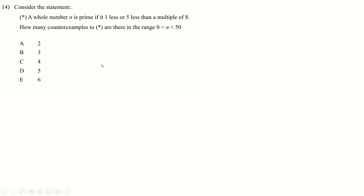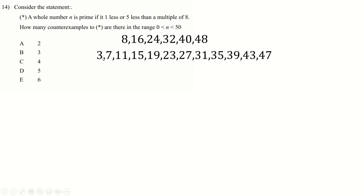Question 14: a whole number n is prime if it is one less or five less than a multiple of 8. Write down multiples of 8 and then all numbers one less or five less than each: 8 → 3 and 7, 16 → 11 and 15, 24 → 19 and 23, and so on. Now look for non-primes in this list — those are counter-examples to the claim. We find 15, 27, 35, and 39 — four numbers that satisfy the rule but aren't prime. So there are four counter-examples.